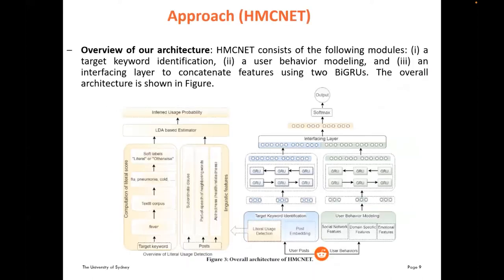Our approach, HMCnet, is shown in Figure 3. It consists of the following modules: target keyword identification, user behavior modeling, and an interfacing layer to concatenate the features using two-layer BiGRUs. We have two main modules — the target keyword identification, which contains literal usage detection and post embedding, and the user behavior modeling. These are concatenated in the interfacing layer, which then feeds into the softmax layer for final prediction.